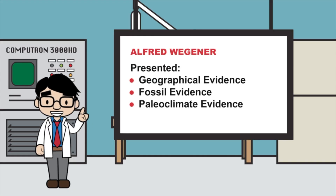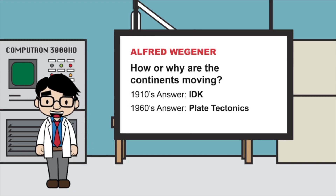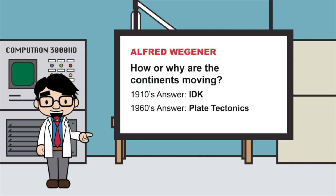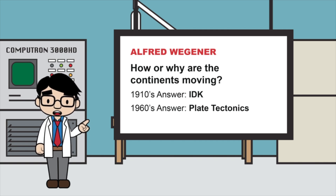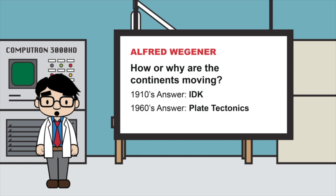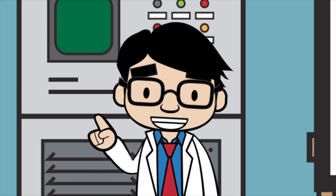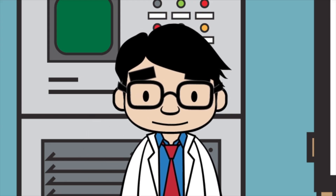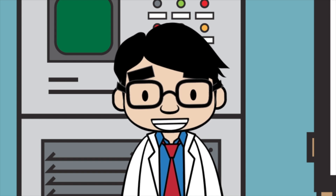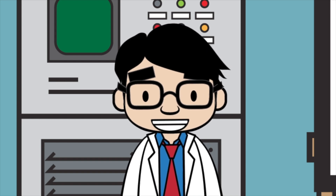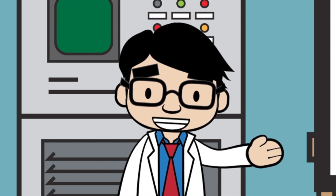He presented not only geographical evidence, but fossil evidence and paleoclimate evidence. At the time, however, Alfred Wegener could not answer the question of how or why the continents were moving — that information was not available in the 1910s. However, by the 1960s, his theory of continental drift was widely accepted and could be explained through plate tectonics.